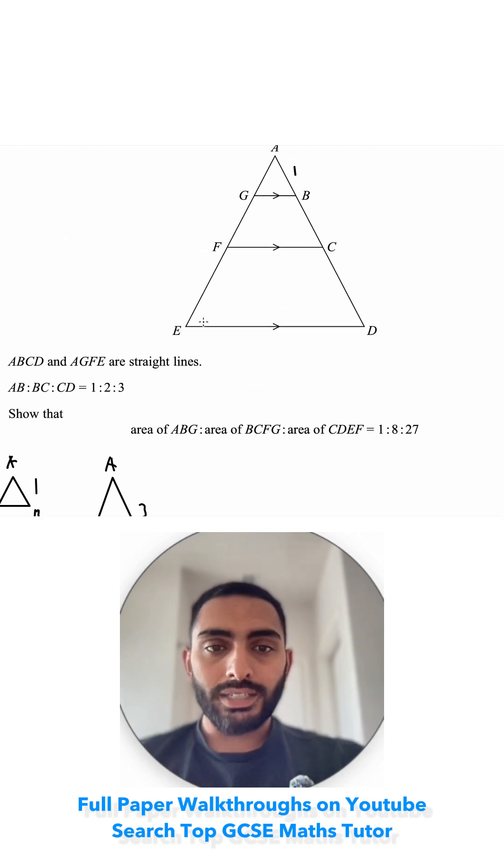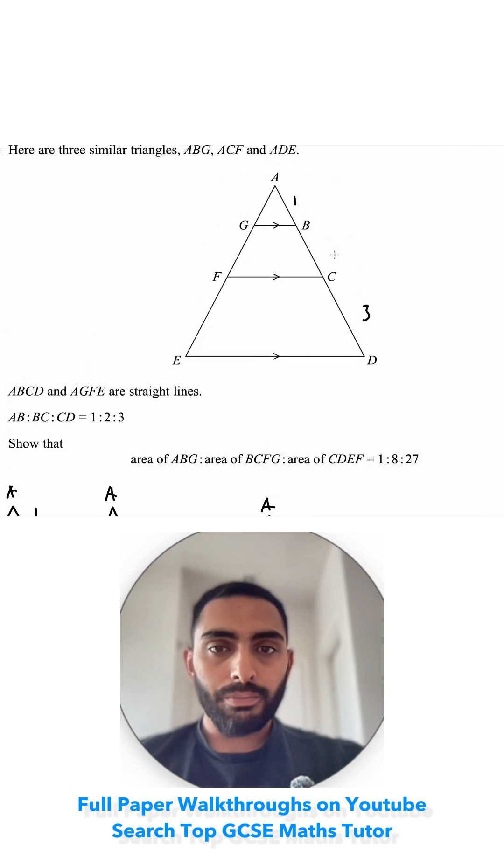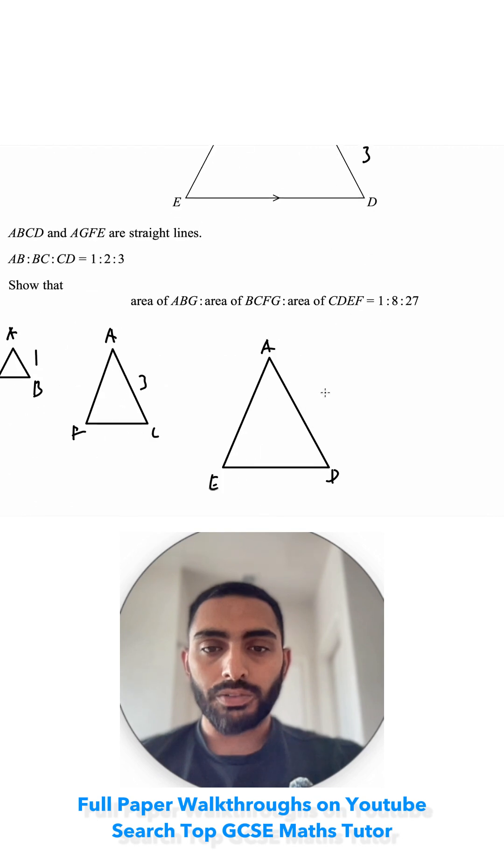Then I've got ADE. I know CD, so this length is 3, that length was 2, so the full length of that triangle, the larger one, is 1 plus 2 plus 3, which is 6.